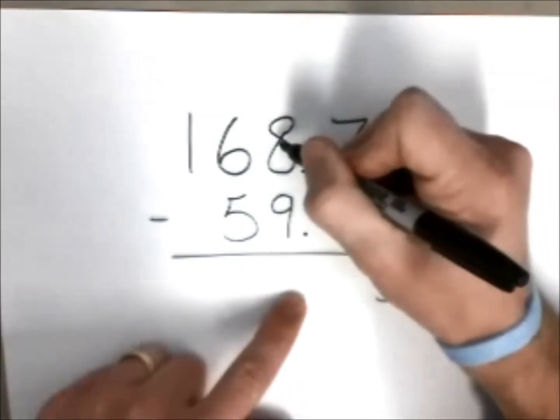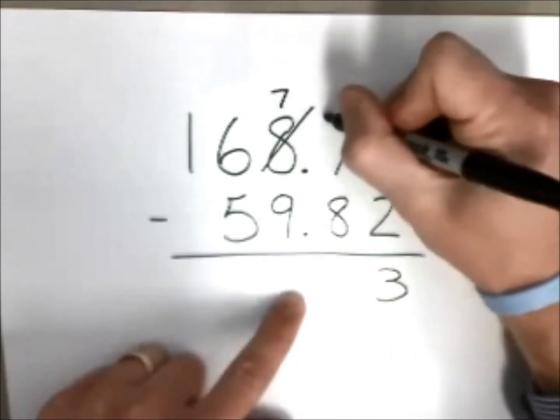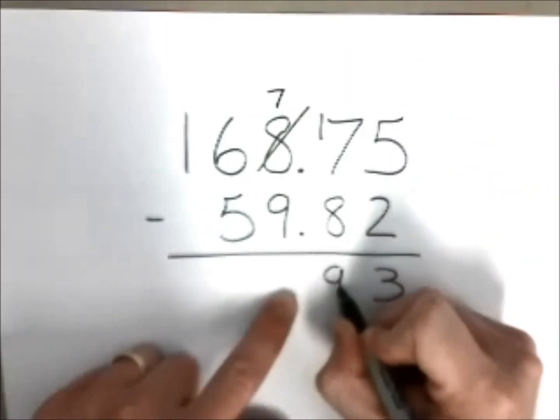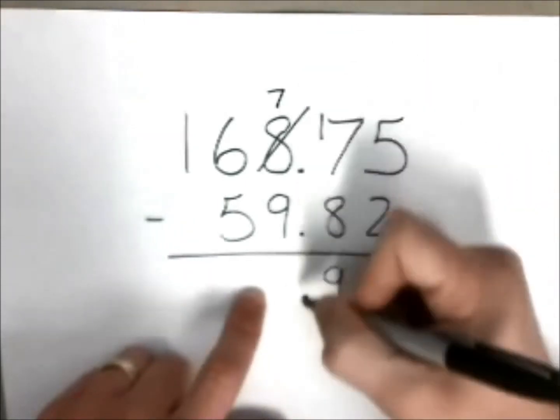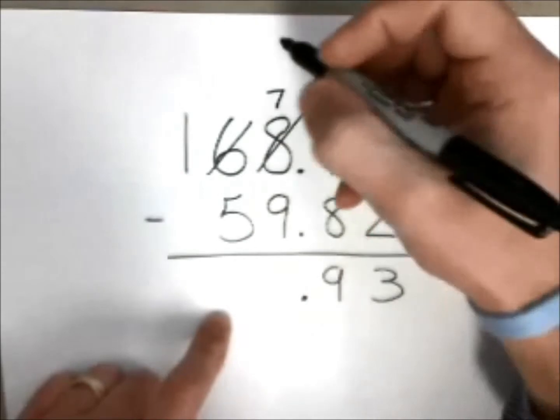Cannot take eight from seven, no way. Got to go next door, we have to ungroup. Convert that to a seven, bring that over here. Seventeen take away eight is going to leave you with nine. Decimal point straight down. Once again, cannot take nine from seven, ungroup.